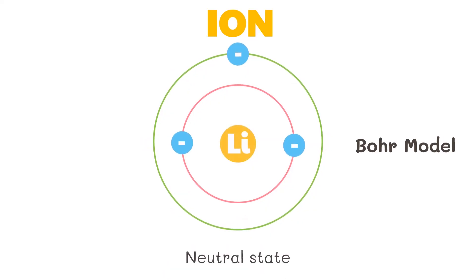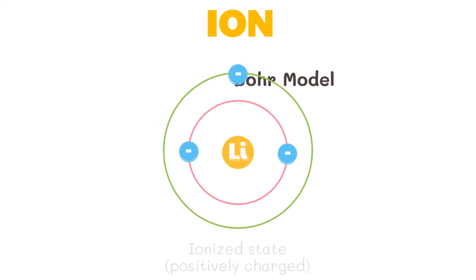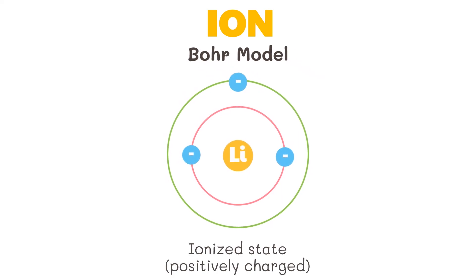Here is lithium in its neutral state. It has one valence electron. Lithium needs to lose its valence electron and become positively charged. The size of the cation, lithium, decreases due to the reduction of valence electrons in its shell.